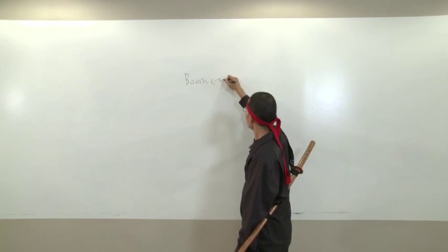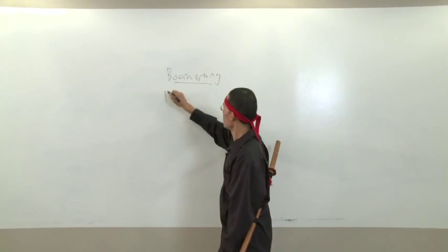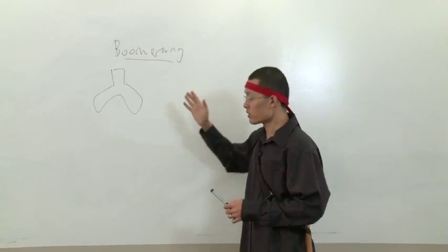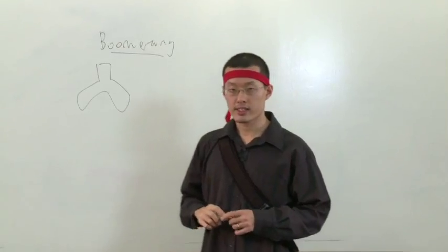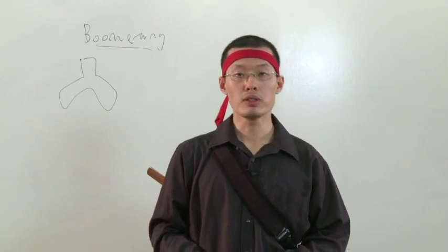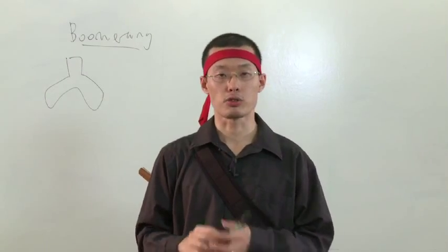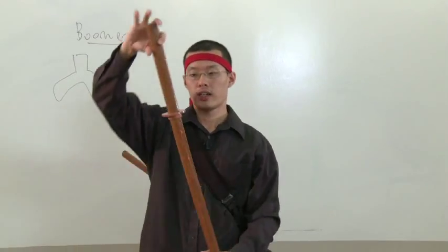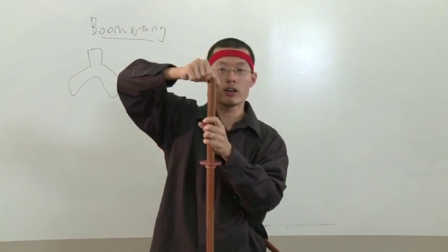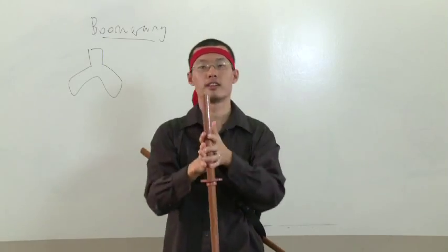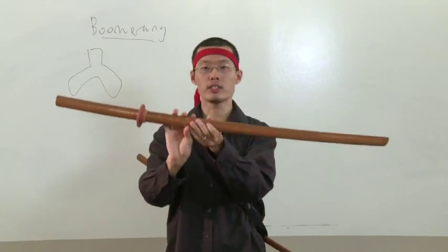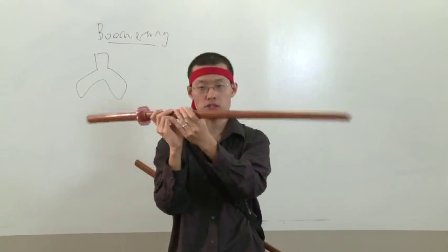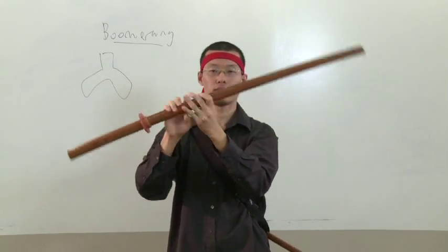So a boomerang looks something like this, right? Before we talk about the physics of a boomerang, there's this thing called the moment of inertia. Now, moment of inertia is a concept of how easy or difficult it is to spin something. Take this sword for instance. When I want to spin the sword around the long end, it's relatively simple, right? I can just spin it quite easily. But if I wanted to spin it this way, there's much more resistance to the motion. It's not so easy to spin the sword this way. It takes more effort. It takes more strength.